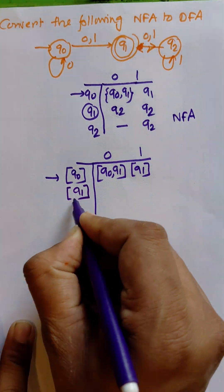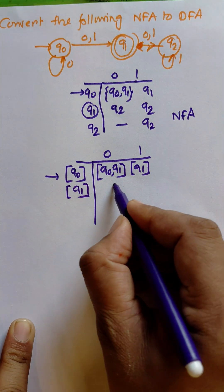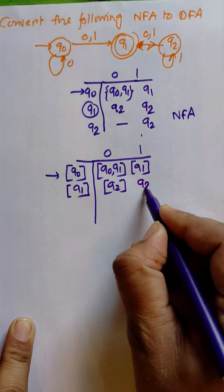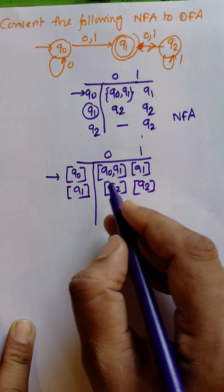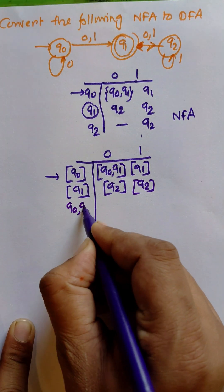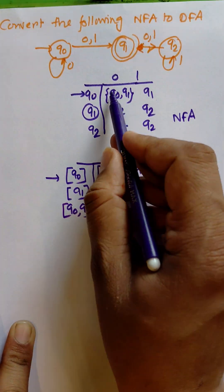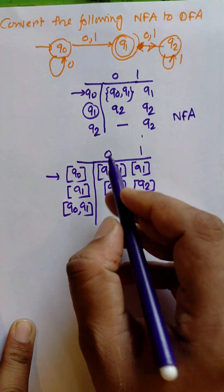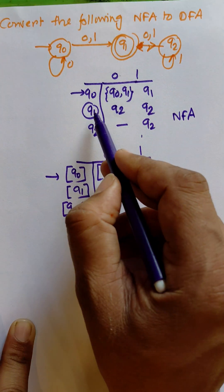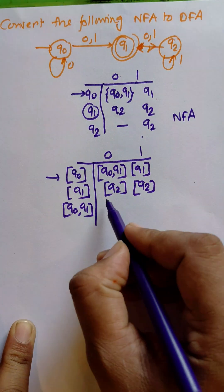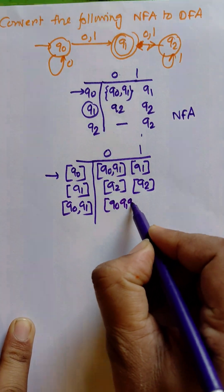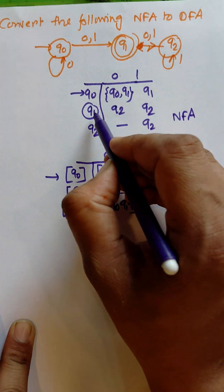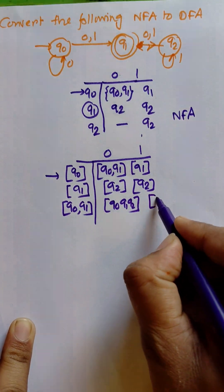First, putting q1 as the present state: q1 to 0 is q2, and q1 to 1 is q2. Now for the state {q0, q1}, taking the union: q0 to 0 is {q0, q1} and q1 to 0 is q2, so taking the union we get {q0, q1, q2}. For input 1, q0 to 1 is q1 and q1 to 1 is q2, giving us {q1, q2}.